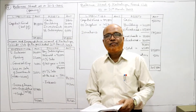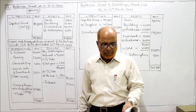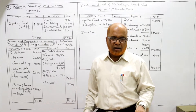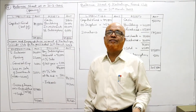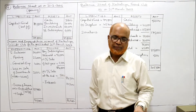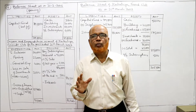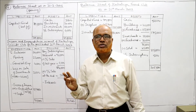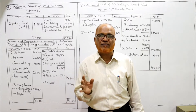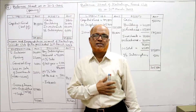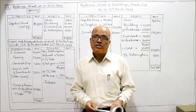In problem five, Kakatiya Friends Club gives us the receipts and payments account and other information, and requests us to prepare the income and expenditure account for the year ended 31st March 2007 and a balance sheet as on that date.